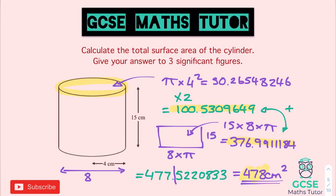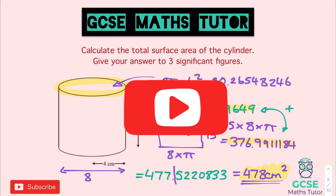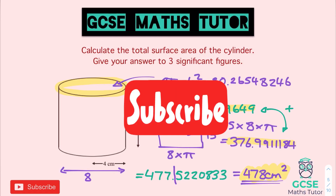And that's how you work out the surface area of a cylinder. Don't forget to check out the video on the volume of prisms — that's going to be really helpful for the volume of a cylinder. The surface area of a cylinder is quite unique as it has this circular face. I hope you found that useful and helpful. If you did, please like, comment, and subscribe, and I'll see you for the next one.